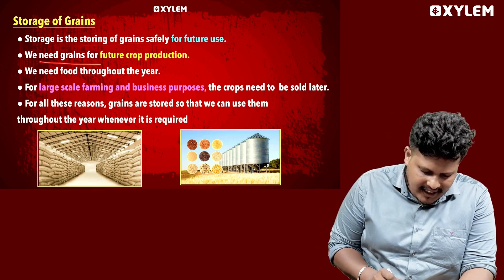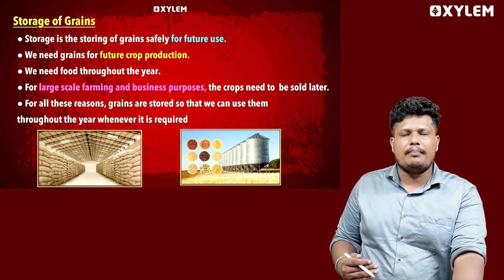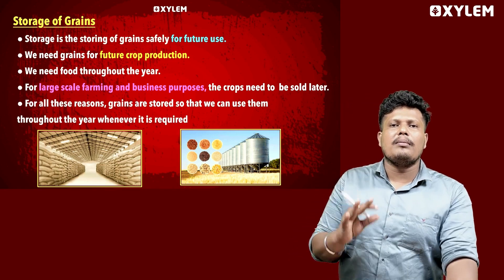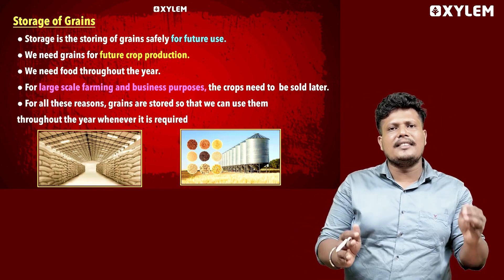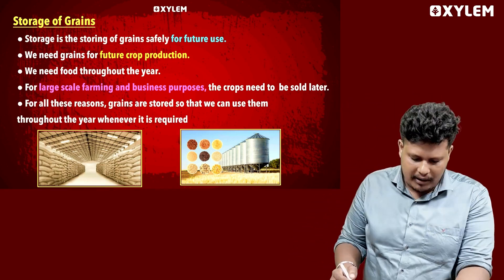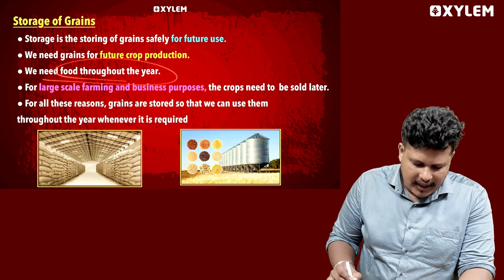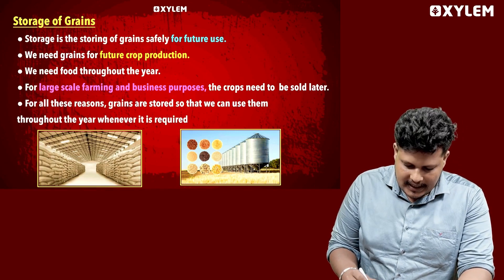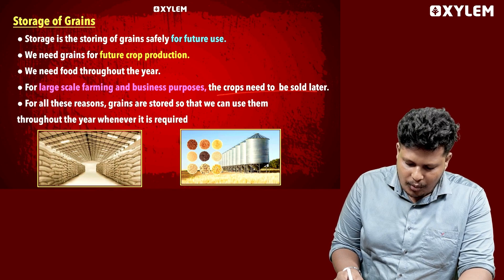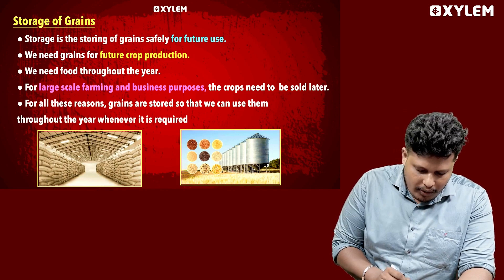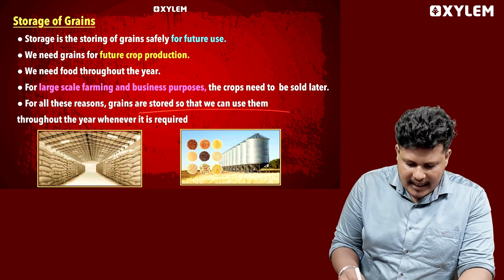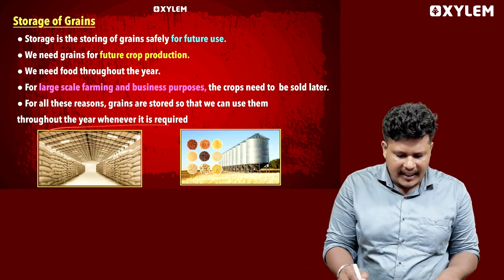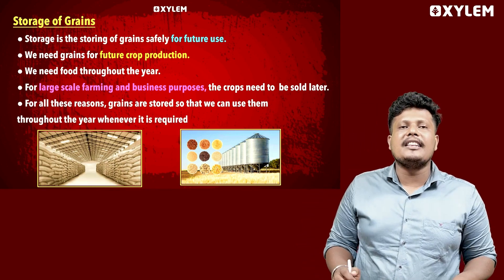We need grains for future crop production. We need food throughout the year. Large scale farming and business purposes — the crop needs to be sold later. For all these reasons, grains are stored so that we can use them throughout the year when it is required.